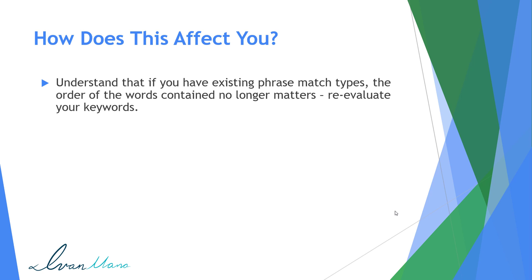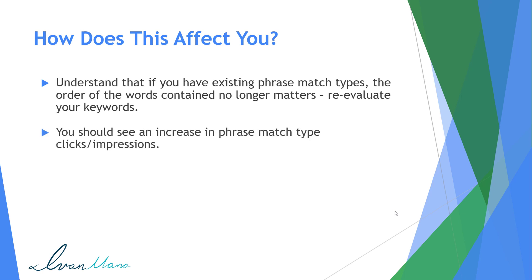So it's up to you to take the initiative. If the order really does matter, then go ahead and add negative keywords — add things like 'party on Halloween' in my example as a negative keyword. Basically, reevaluate your keywords because now the order matters. You should see an increase in phrase match type clicks and impressions, because now the order of the words generally no longer matters. So when Google deems that the order doesn't matter — like 'buy shoes' or 'shoes to buy' — you're going to see an increase in your phrase match type clicks and impressions.